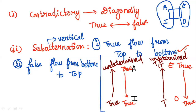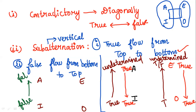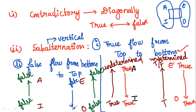If A is true, I is true. But the reverse — A false from I — is undetermined. In the E, O relationship: if O is false, E can be false, but the reversal cannot happen. If E falls on the top as false, O will be undetermined — either true or false. If A falls as false, I will be either true or false — undetermined. Using these two rules — contradictory and subalternation — you can answer any kind of square of opposition question.